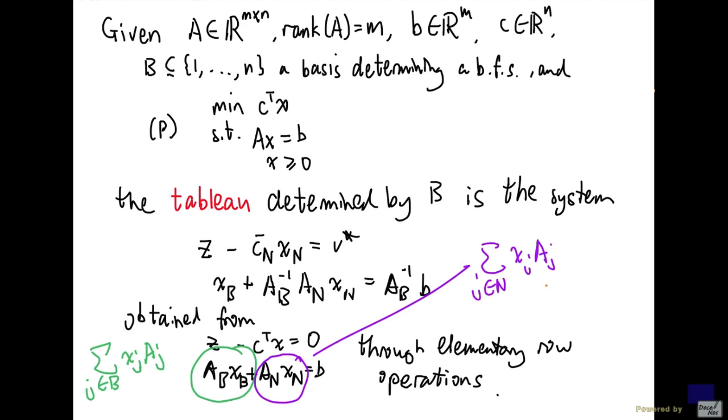This should not be surprising because if you look at A times x, A times x can be written as the sum of j from 1 to n, x_j times a_j. So this expression on the left is basically splitting A times x into 2.